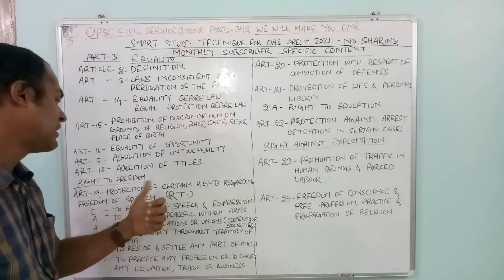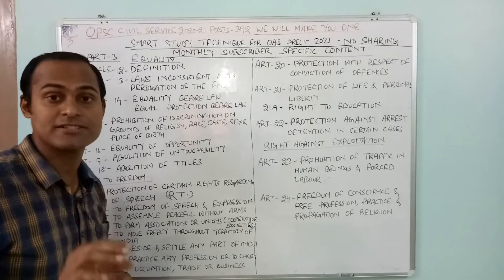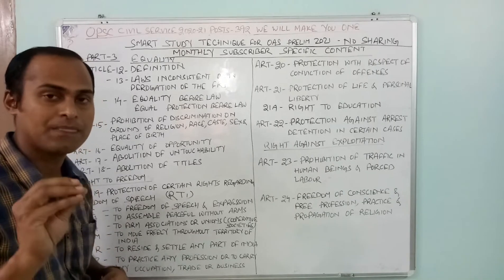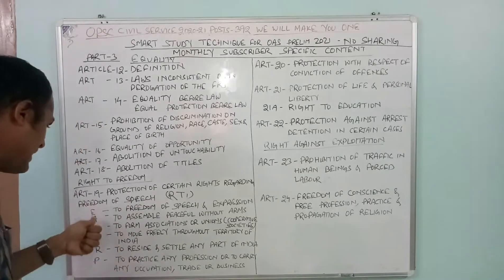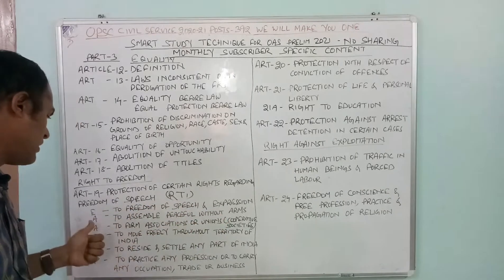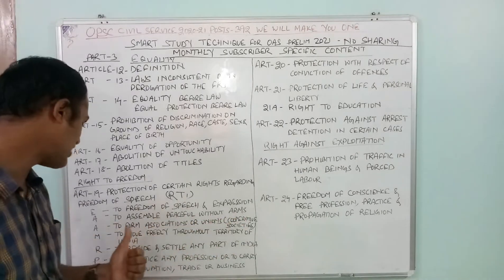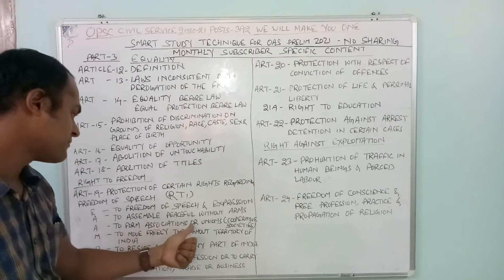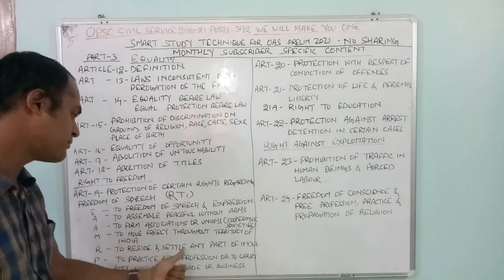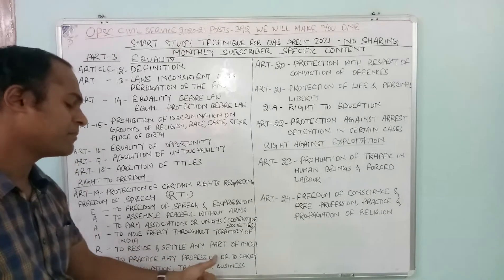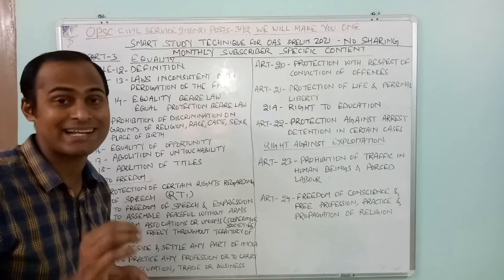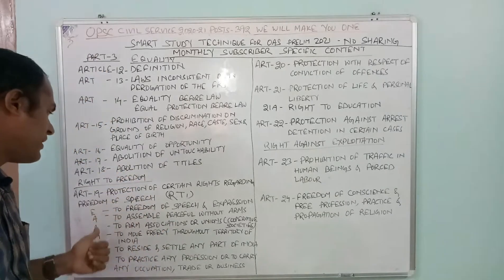Article 19 covers protection of certain rights regarding freedom of speech. RTI — right to information — is placed under Article 19. To remember Article 19, use the mnemonic EAAMRP: E for freedom of speech and expression, A to assemble peacefully without arms, A to form associations or unions including cooperative societies, M to move freely throughout the territory of India, R to reside and settle in any part of India, and P to practice any profession or carry out any occupation, trade, and business.